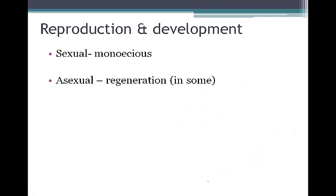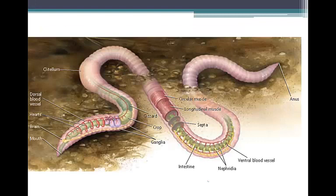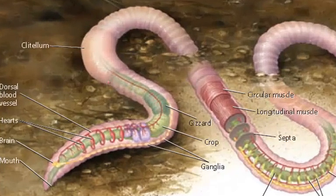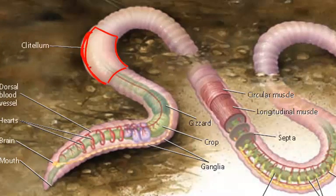Annelids exhibit both sexual reproduction, and some species can also reproduce asexually through regeneration. After fertilization, the clitellum — visible on the outside — forms a slime tube where the sperm and eggs join. This eventually becomes a cocoon for the external development of the embryo, so even though fertilization is internal, the embryo develops externally.